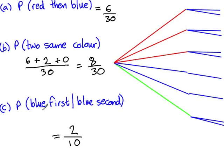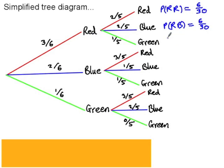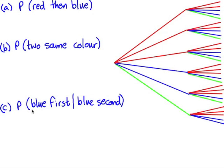The third question was: what's the probability of achieving a blue first given that I selected a blue second? I'm going to start by working out the probability of each combination. Probability of red-red: six out of thirty. Probability of red-blue: also six out of thirty. Probability of red then green: three out of thirty, and so on. Assuming I've done this correctly, these probabilities should total one. The question was: what's the probability of drawing a blue marble first given that I've drawn a blue marble second?